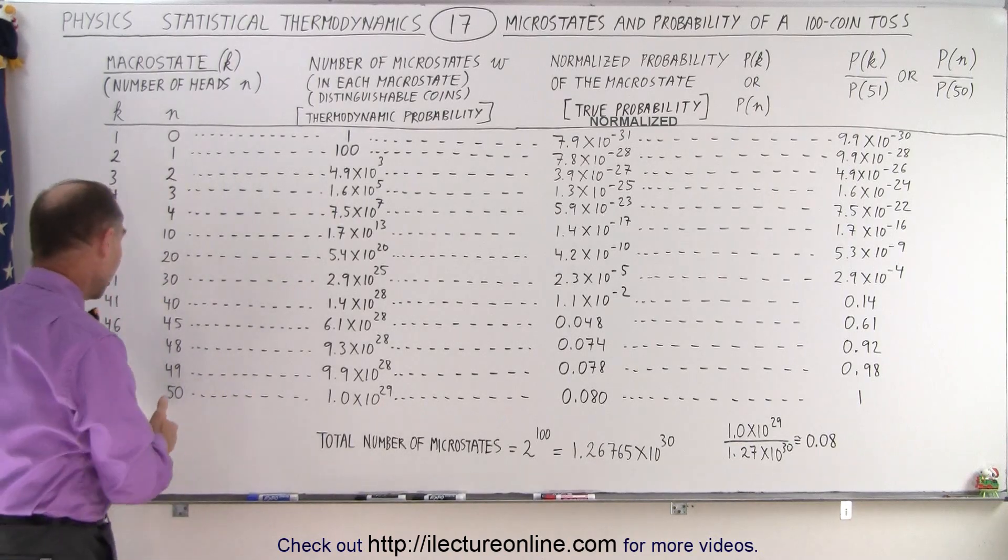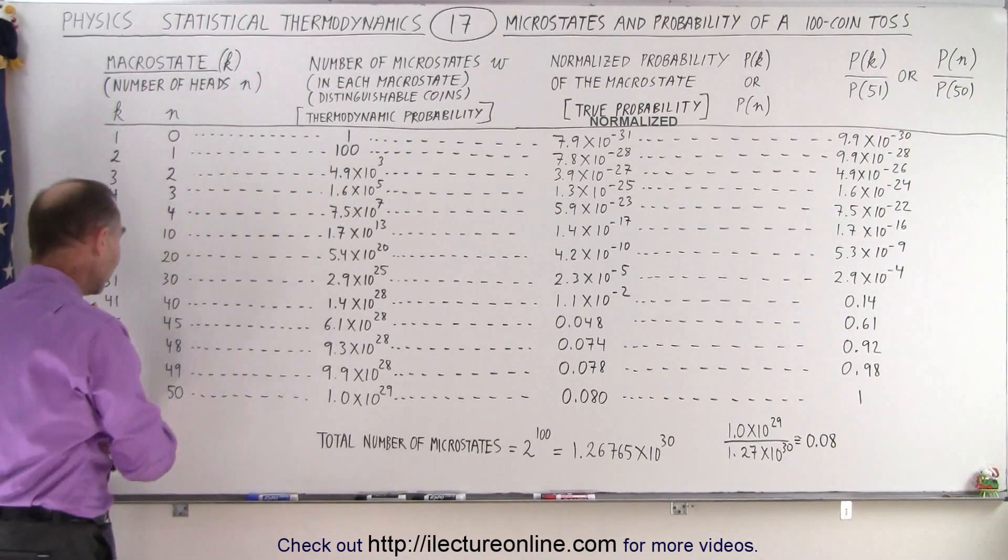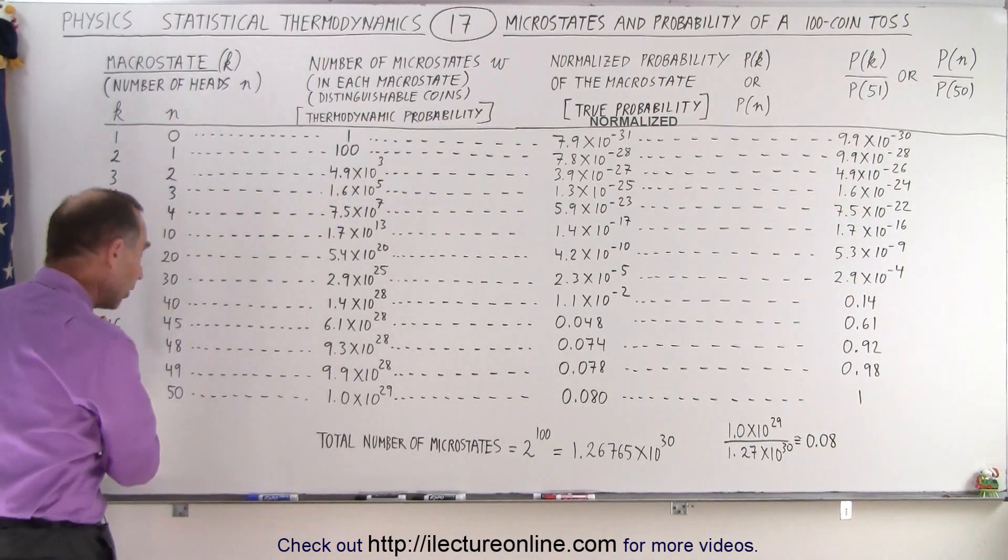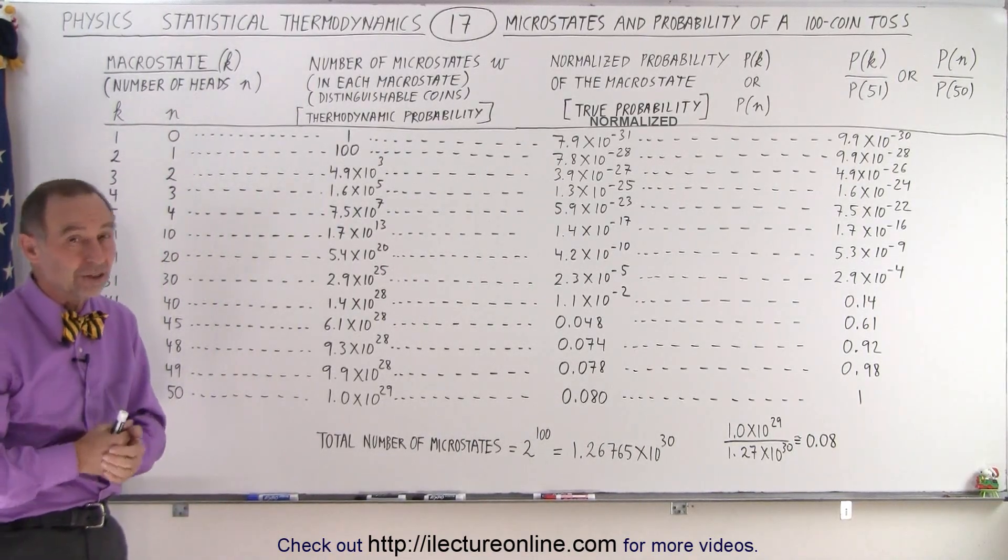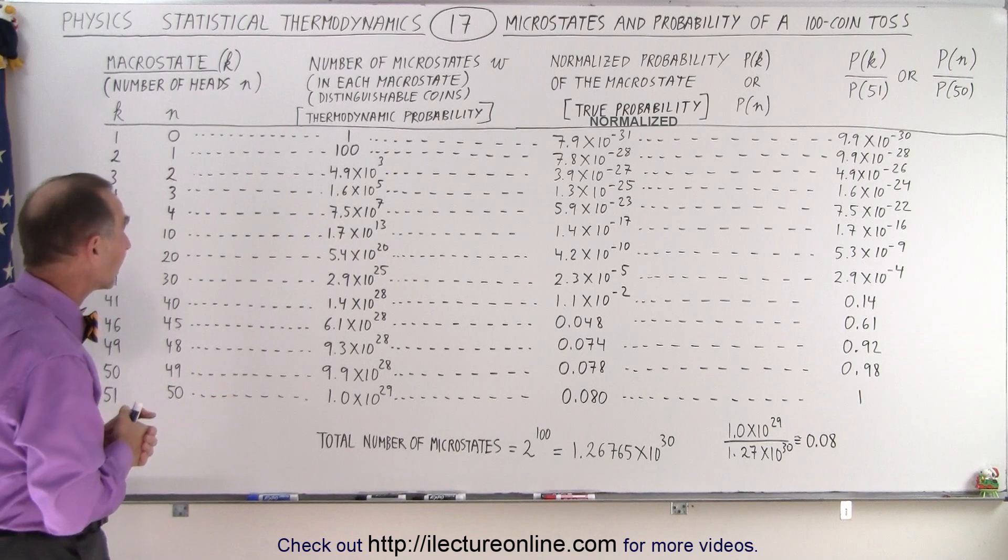But of course, we can continue all the way from 1 to 101 different macrostates because we can have 100 heads, of course, which would be the 101st macrostate. There's 101 different macrostates we can have.